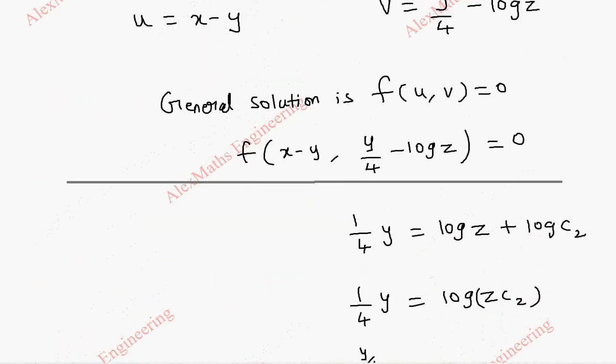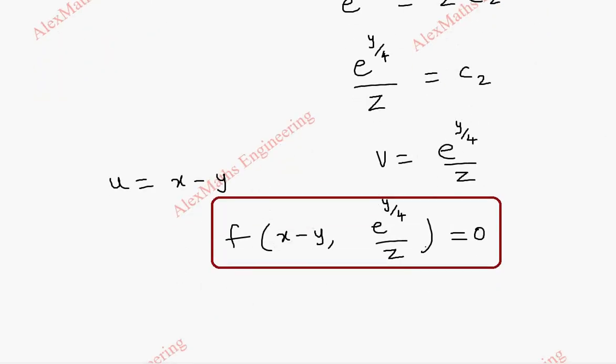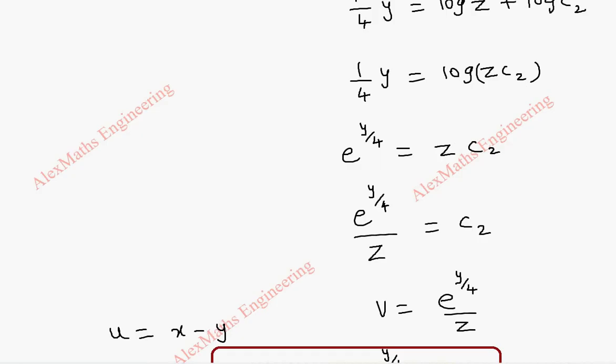So even if I give the answer like this, this is correct, or by taking log c2 and rearranging it I get like this. And in the same way from here, even this can be rewritten as taking this term to the other side.